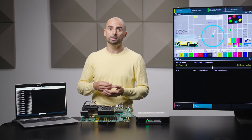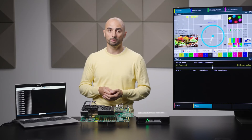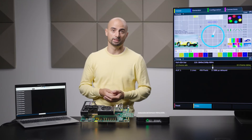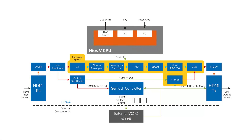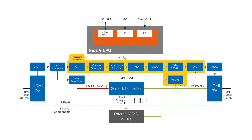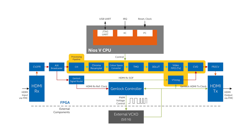The video processing pipeline for this example design is composed of a clocked video input IP, chroma resampler, color space converter, tone mapper, a 3D lookup table, video FIFO, and clocked video output with an embedded video timing generator.